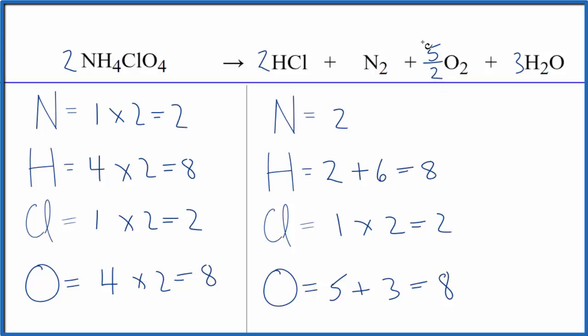The problem is some teachers don't like the fractional oxygen here. If that's the case, you can multiply all of the coefficients by two. So I'd end up with two times two, that's four. Two times two is four. Two times one is two. Two times five over two, the twos would cancel out. That would give me five. Two times three is six. So let me clean this up.